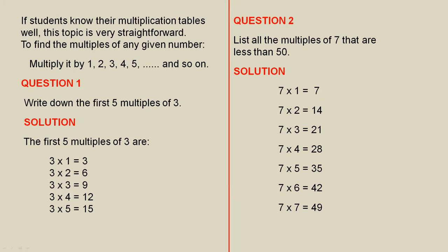If students know their multiplication tables well, this topic is very straightforward. To find the multiples of any given number, multiply it by 1, 2, 3, 4, 5, and so on. Let's see some typical questions on this topic.